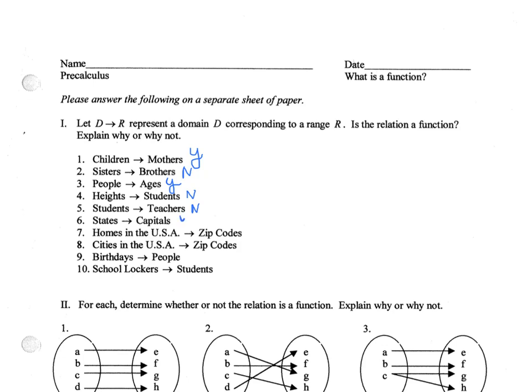This is a yes, as each state has one and only one capital. This is also a yes, but this is a no, as cities in the United States can have more than one zip code. But each person has only one birthday. However, multiple people can have the same birthday. This is birthdays to people. So we're going to say that that's a no.